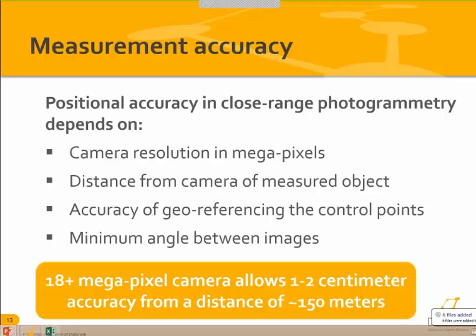The minimum angle between images is really important — it's sort of like a resection. The better the angles between three images, the better the results. We recommend an 18-plus megapixel camera, which can allow for about 1 to 2 centimeter accuracy from a distance of about 150 meters. The price difference between an 18 and a 24-megapixel camera isn't huge — if you can afford it, I would go for the 24-megapixel.